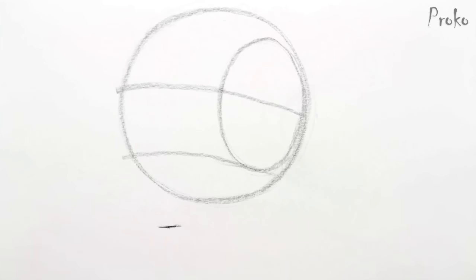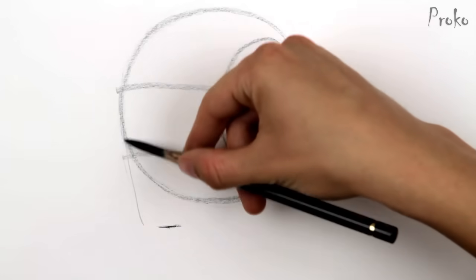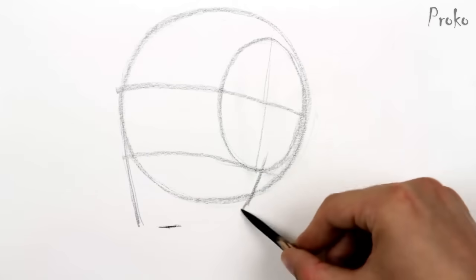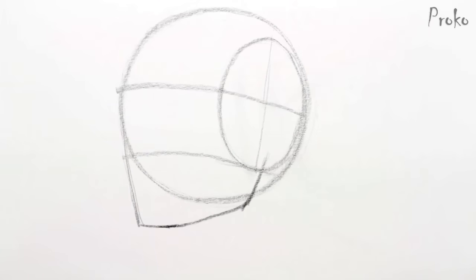Observe the general shape of the jaw and draw on the major angles starting from the brow, coming down to the chin, and going around to the side plane of the head. It's usually about half way into the oval or a little bit further back.